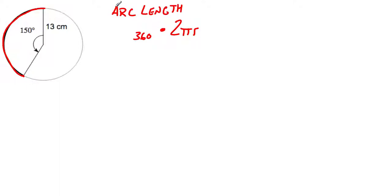So the general formula that we have is whatever that central angle is, which we call theta, we divide it by 360 and multiply by 2πr.